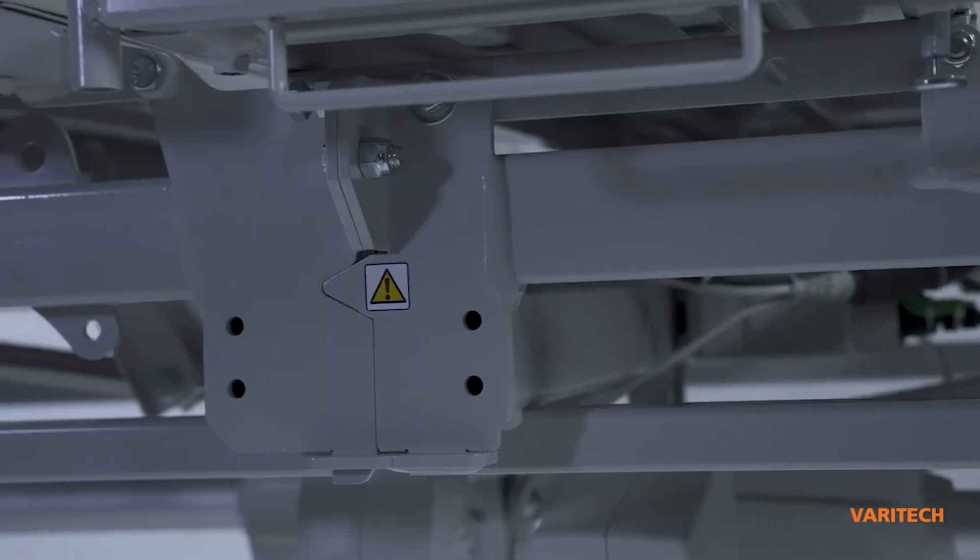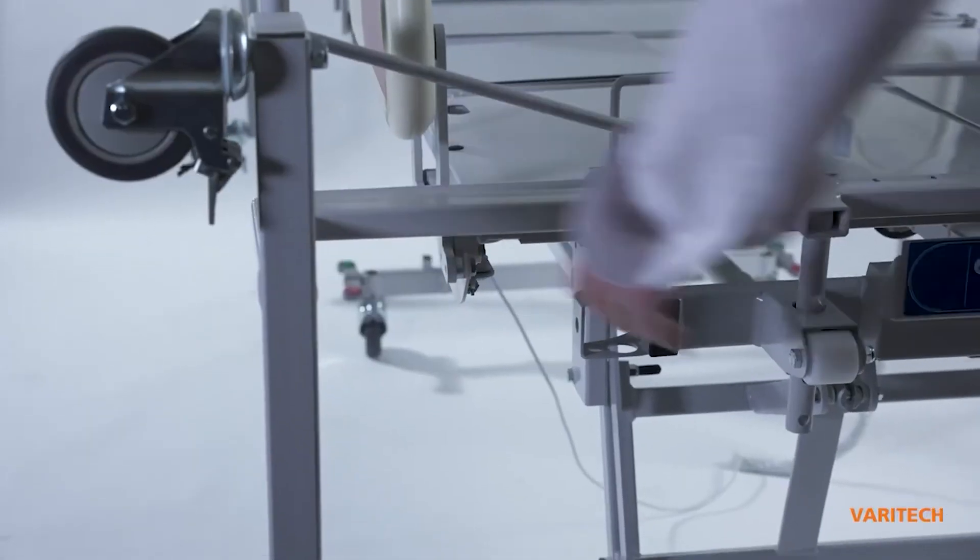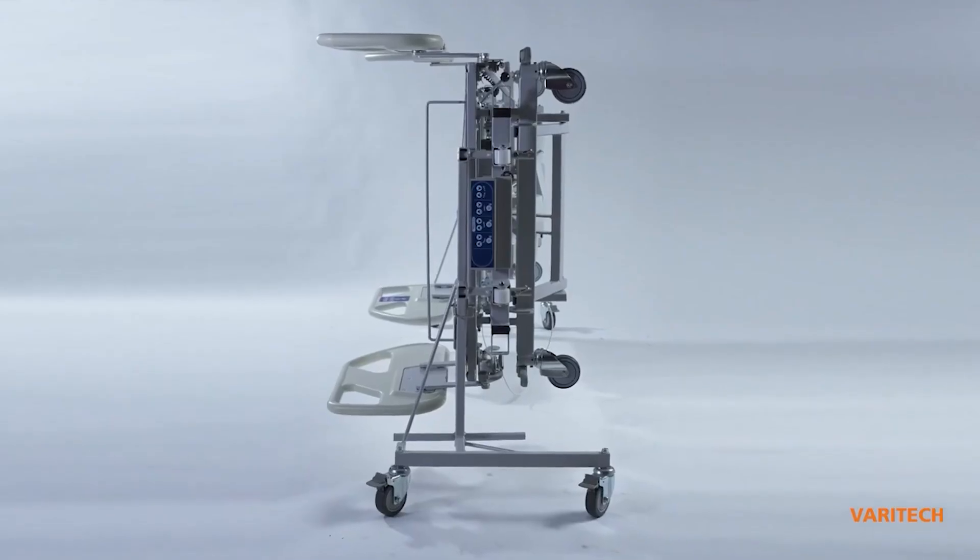The bed may be separated in two sections to facilitate transport. The Varitek can easily be carried or stored on its side using a pair of transport trolleys.